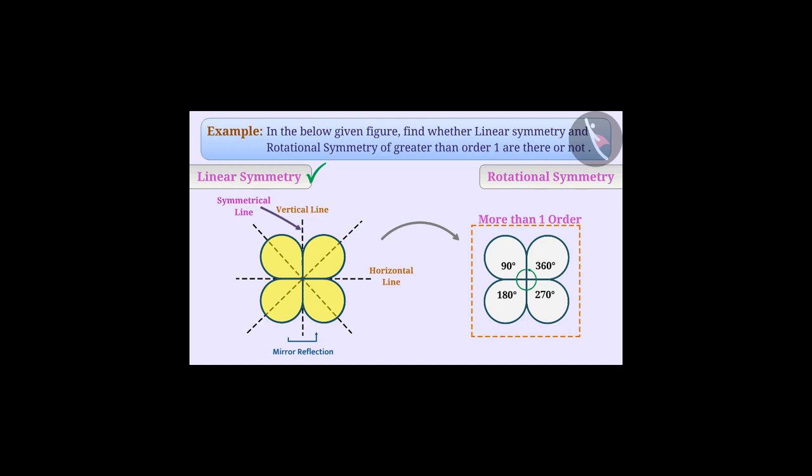So we can say that the shape has rotational symmetry of order 4. Thus, the given figure has both linear symmetry and rotational symmetry of more than one order.